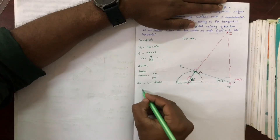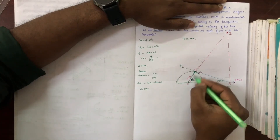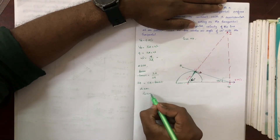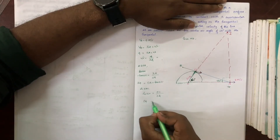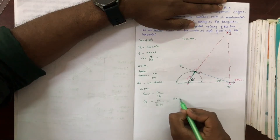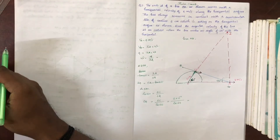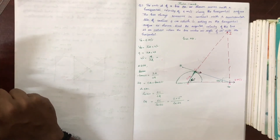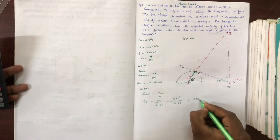We have to find OA — the adjacent side OC divided by the hypotenuse. OA is equal to OC divided by cos(t). OC is 6 cm, so that gives us OA equal to 6 divided by cos(t), which is equal to 0.12 meter.